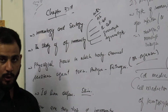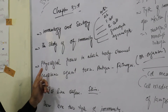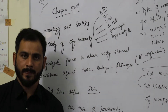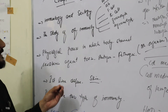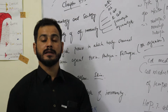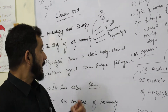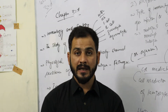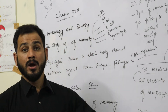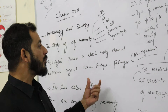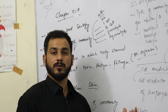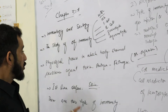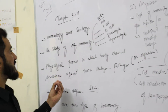The study of immunity is called immunology — the physiological process in which the body resists against toxins, antigens, or pathogens. This is called the immune response. This study is called immunology.